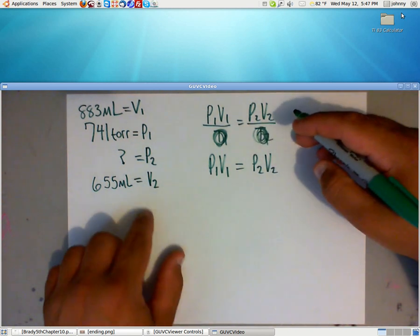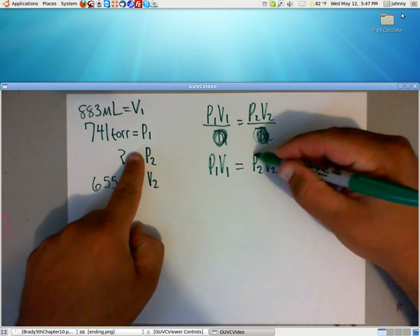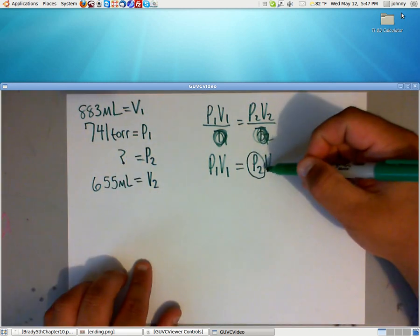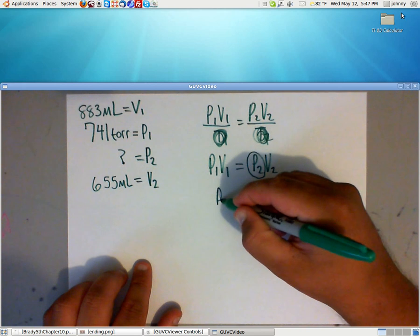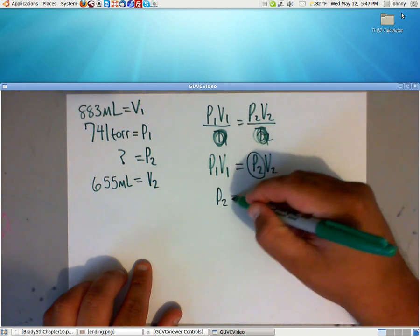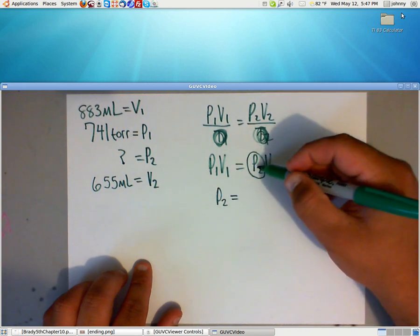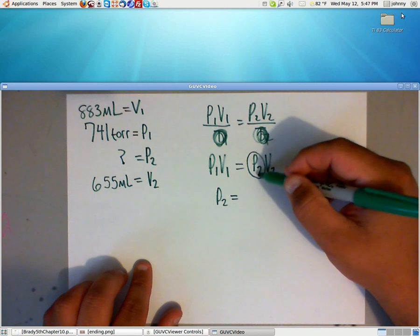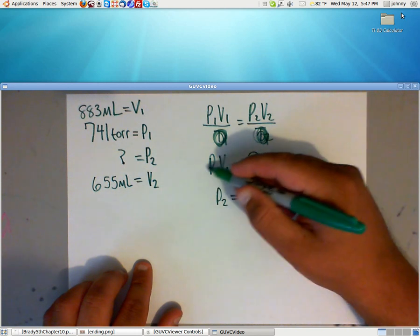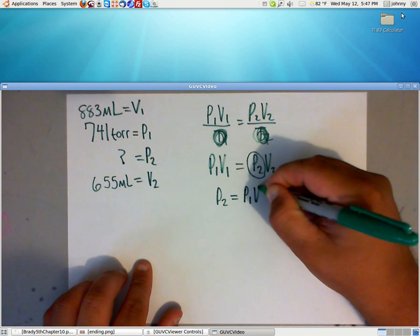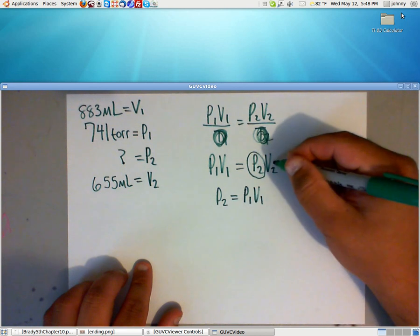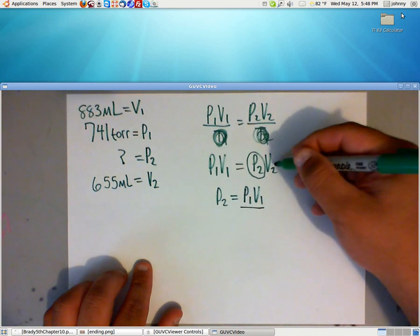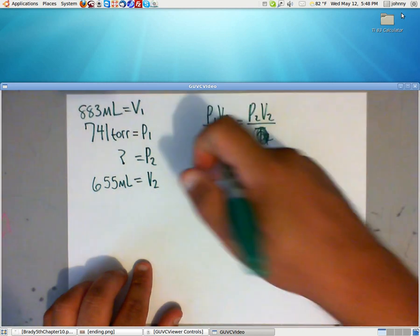So all that we need to do now is solve this for the second pressure. Notice that this is being multiplied. So to get the P2 by itself, you need to move the V2 down. If you're going to try to get the P2 by itself, the P1 and the V1 does not need to move. Only the V2 needs to move. And it will be moved down here because you have to divide both sides by V2.